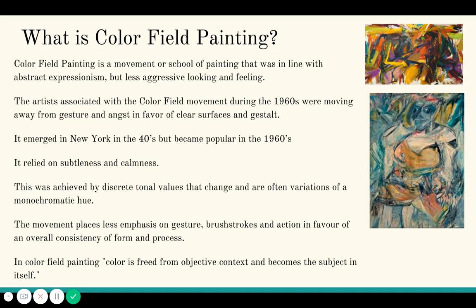Color field painters wanted to still work with mark making and strong color, but turn it into more subtle organic shapes and tonal changes that are more transient from one tone to another — a calmness between dark values and light values. Instead of bold striking changes from dark blue to vibrant yellow, they were looking for variations of monochromatic hues, getting the entire value scale in a more subtle and discreet way. The movement places far less emphasis on gesture.